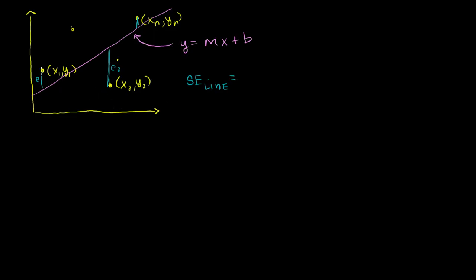you literally just take the y value at each point. So for example, you take y1 — that's this value right over here — you take y1 minus the y value at that point on the line. That point on the line is essentially the y value you get when you substitute x1 into this equation. So minus (mx1 + b). This right here is mx1 + b — that is error 1 right over there, the squared error.